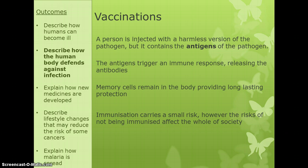This leads us to vaccinations. A vaccination gives a person immunity to an illness by injecting them with a harmless version of the pathogen — either a dead version or a slightly different pathogen that won't cause the full-blown illness but is similar enough to trigger the same immune response. What's important is that what's injected has antigens, because that's what triggers the immune response. Once the body has reacted to those antigens, it produces memory cells which remember the antigens so it can fight off the illness again.